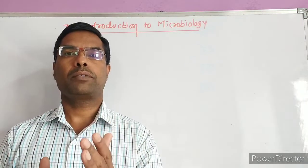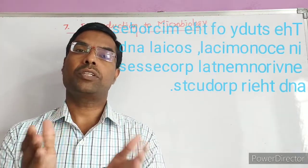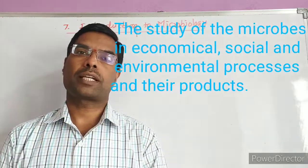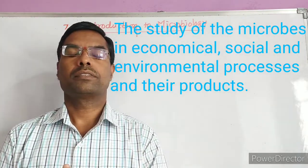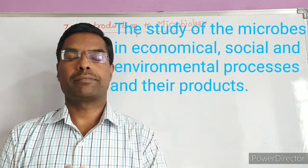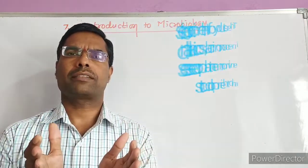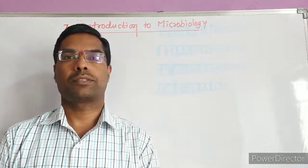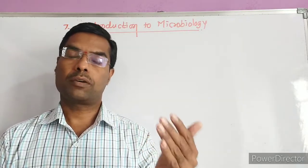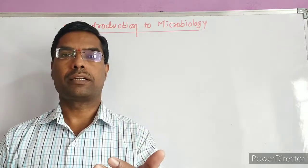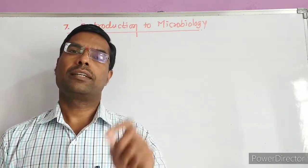The second branch of microbiology is industrial microbiology — the science related to the study of the use of microorganisms to solve social and environmental problems, and the related processes and products. This covers the economical, social, and environmental level of microbiology.